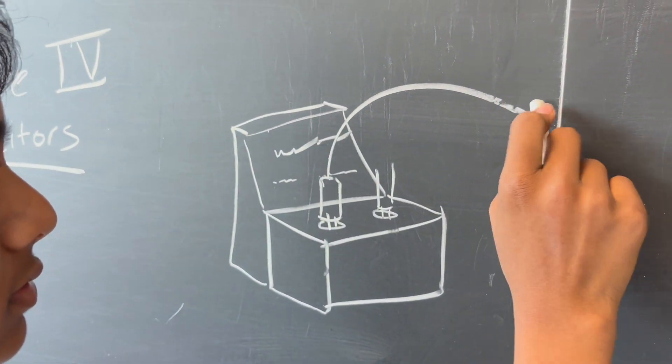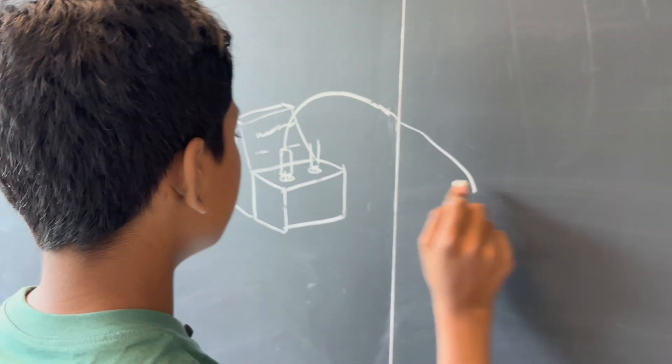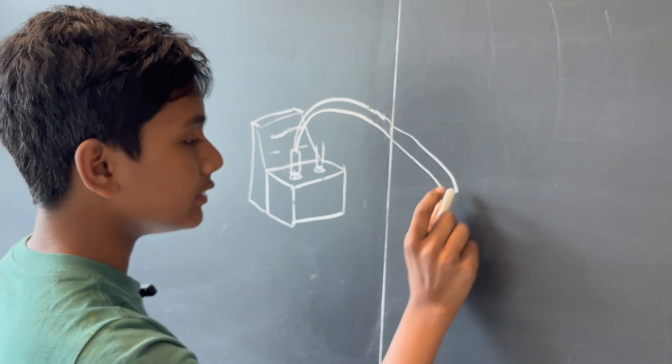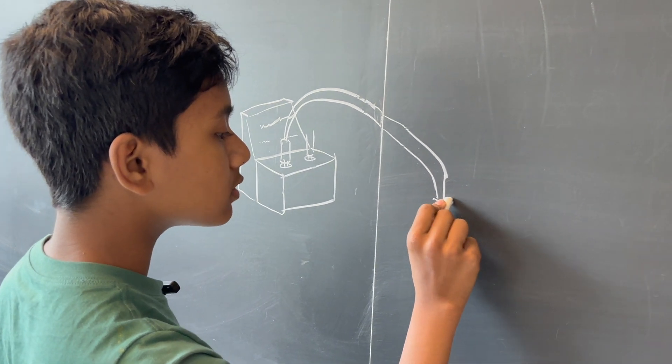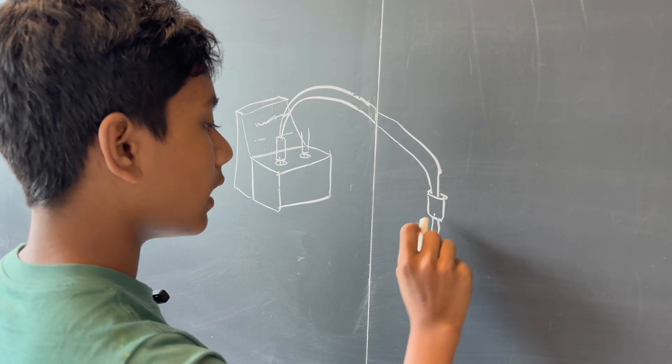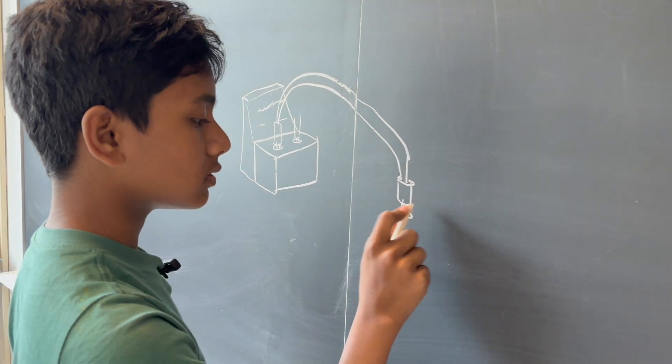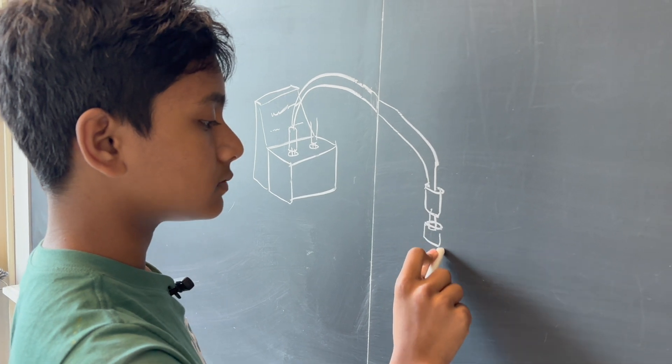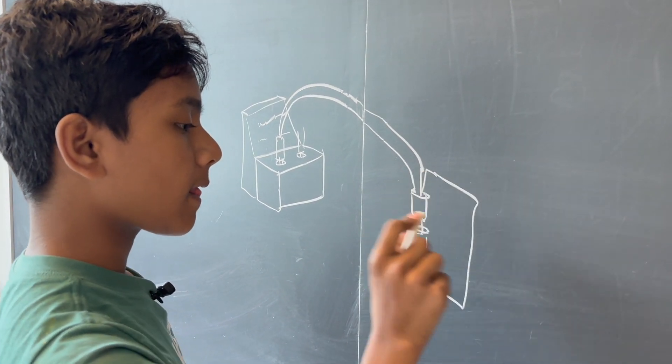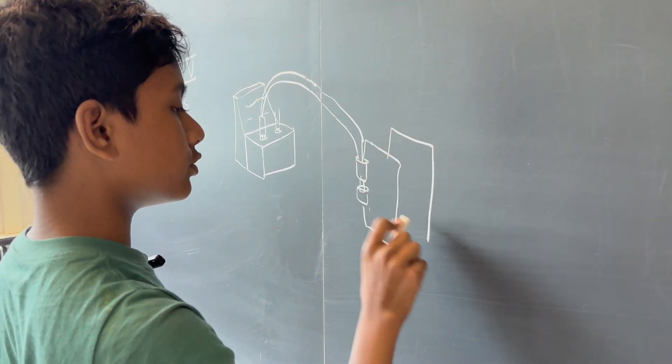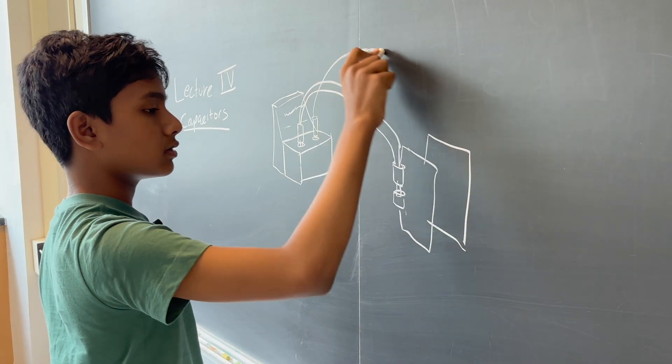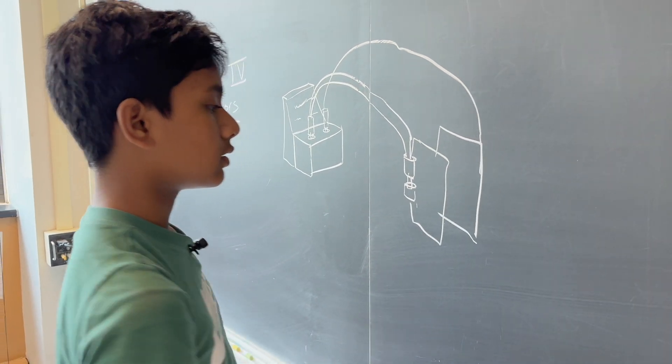You plug them into the anode and cathode of two parallel plates. So here's parallel plate number one and here's parallel plate number two. So the other one might be connected right over there on the other side.